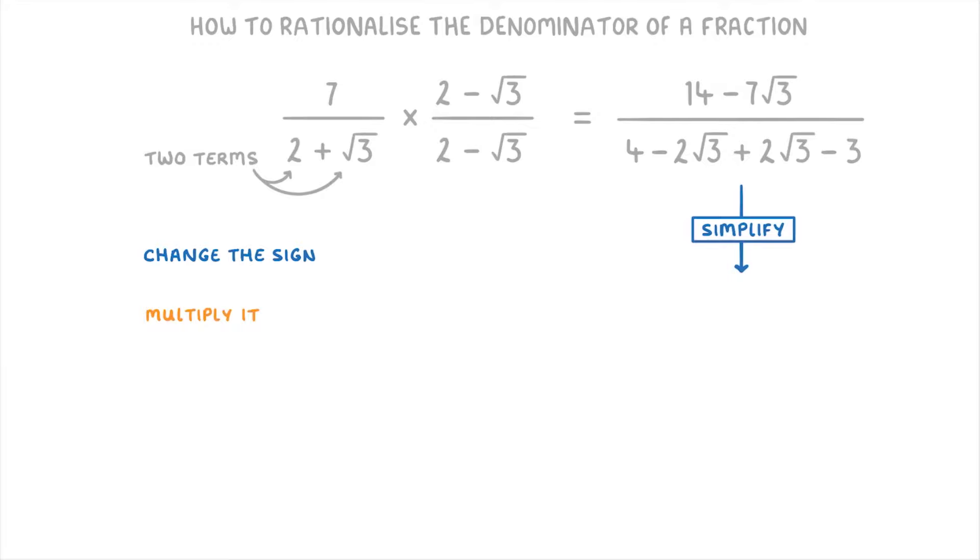So if we simplify the denominator, we can cancel out the minus 2 root 3 and the plus 2 root 3, and just do 4 minus 3, which will give us 1 as our new denominator.